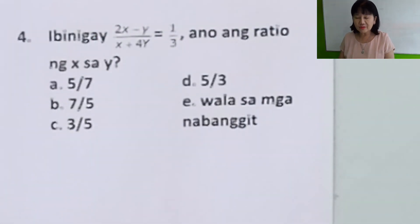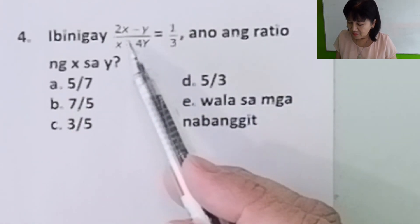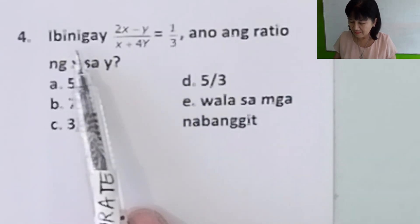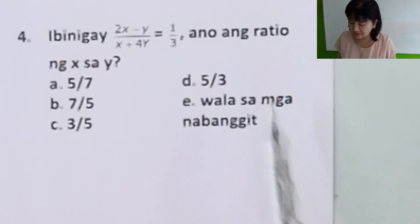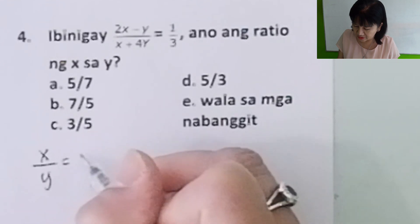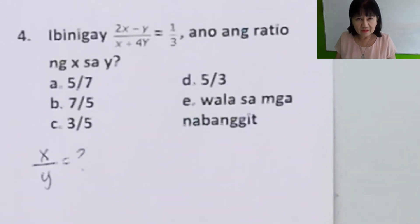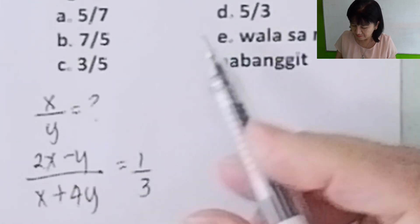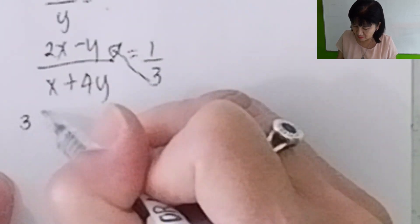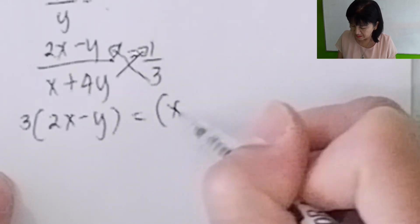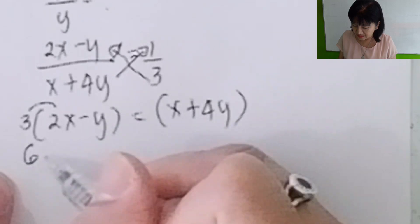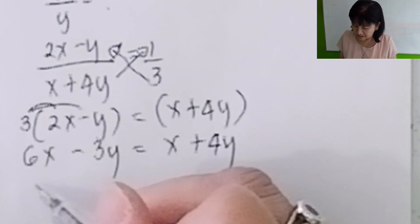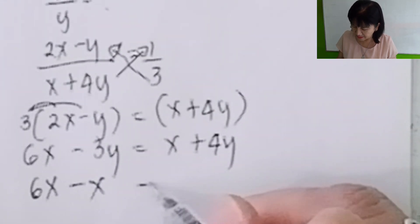Problem number four. Ibinigay: given (2x minus y) over (x plus 4y) plus one-third. Ano ang ratio ng x to y? In English: given (2x minus y) over (x plus 4y) plus one-third, what is the ratio of x to y? You can take a shortcut here: cross multiply. (2x minus y) over (x plus 4y) equals 1 over 3. Multiply this with that, so you have 3(2x minus y) equals (x plus 4y). Distribute: 6x minus 3y equals x plus 4y.